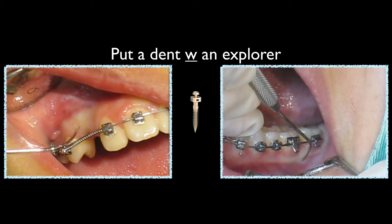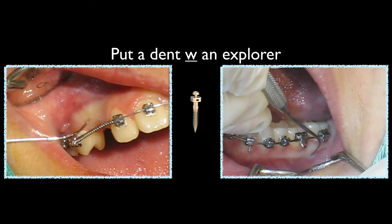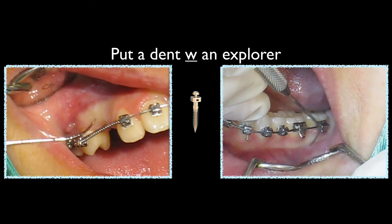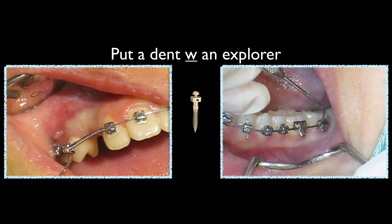First, get an explorer and make a pilot hole through the soft tissue and through the cortical bone. Once you're through the cortical bone, make sure you have numbed the tissue before you do that — otherwise the patient will jump out of the chair.